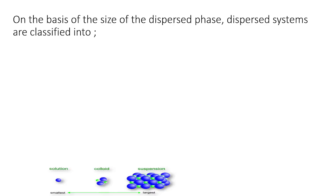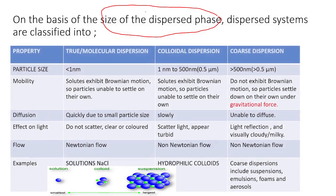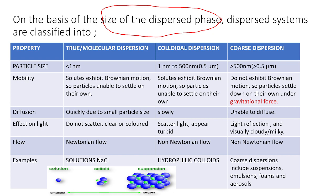Today's topic is dispersion systems. There are different kinds of dispersion systems: molecular dispersion, colloidal dispersion, and coarse dispersion. Based on the particle size of the dispersed phase, the dispersion system can be classified into three types: number one is true or molecular dispersion, next is colloidal dispersion, and next is coarse dispersion.